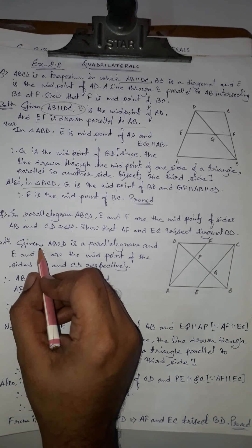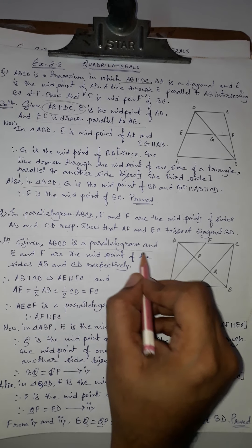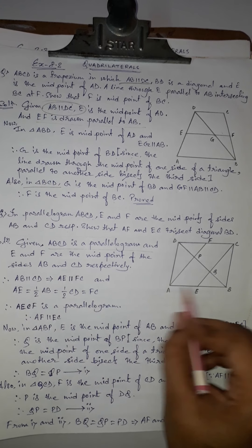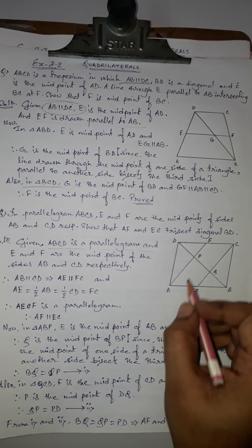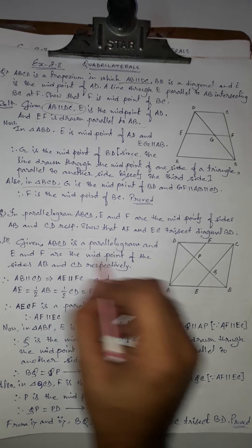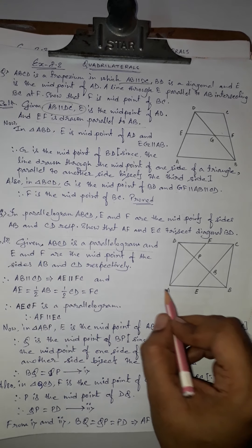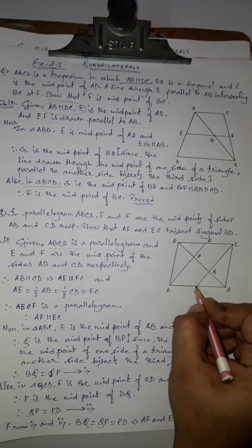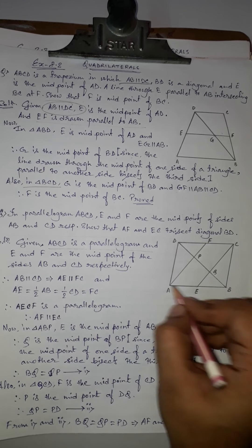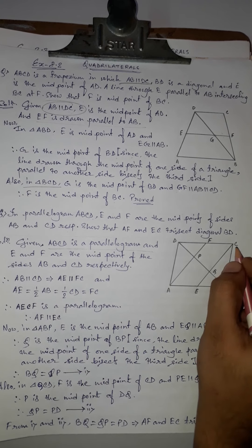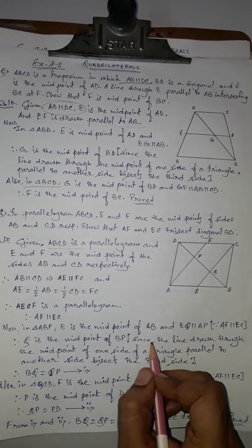In the given: ABCD is a parallelogram, and E and F are midpoints of AB and CD respectively. From the figure, ABCD is a parallelogram with E as midpoint of AB and F as midpoint of CD. The diagonal is BD, and if we join AF and EC, we have to prove they trisect BD.